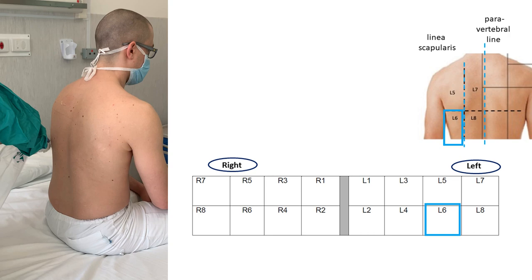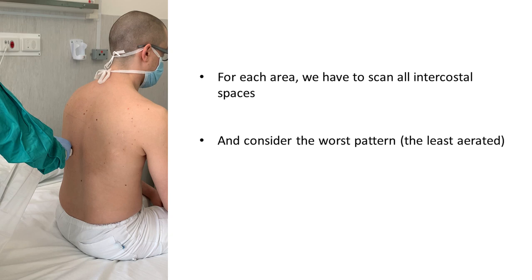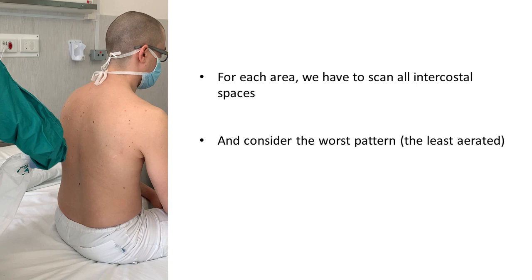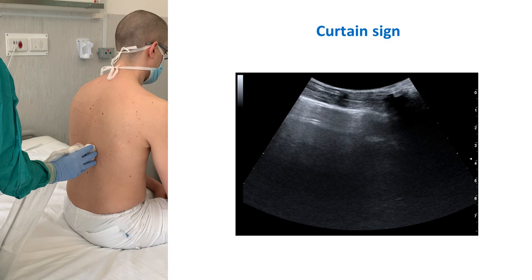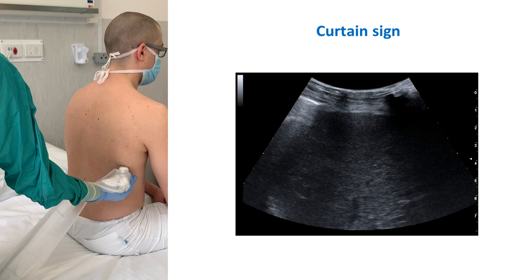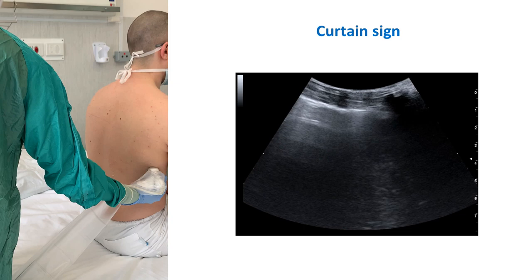We have to scan all the intercostal spaces for each area, taking into account the worst pattern. At the lung base, we should visualize the so-called curtain sign — the interface between the lung and the liver or spleen — where we may also find a possible pleural effusion.